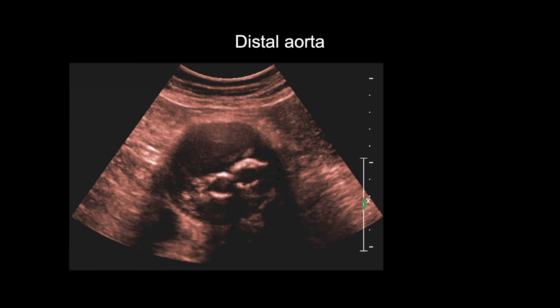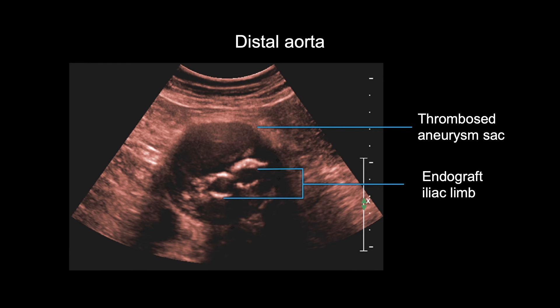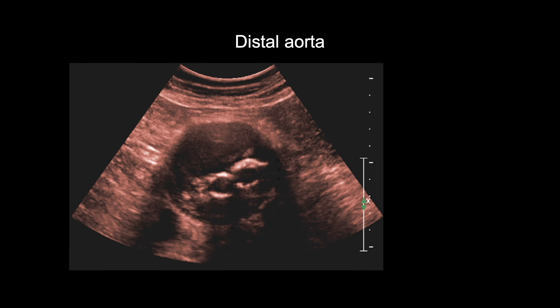Moving to the distal aorta, you will see a black circle representing the thrombosed aneurysm sac. Within the sac, echogenic circles represent the right and left endografted iliac limbs in transverse view. These are usually easy to recognize. This sac area is where the majority of endoleaks can be detected on ultrasound — namely, type 2 endoleaks are seen here. Measure the anterior-posterior diameter of the distal aorta in transverse view, from outermost wall to outermost wall, including all of the thrombosed area.